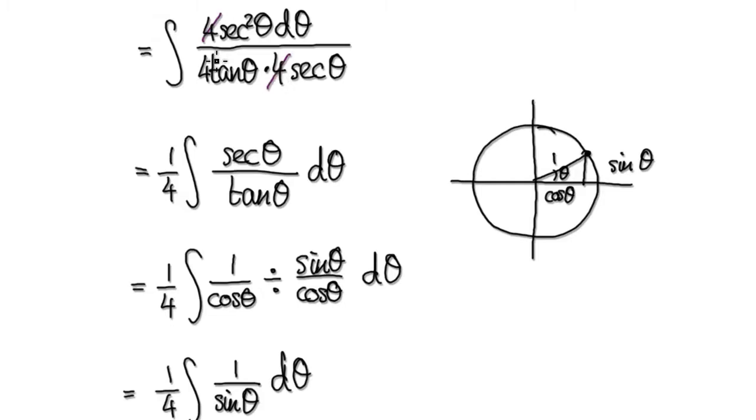The 4 will cancel out. You've still got a quarter here. A quarter is a constant, you can take it out. That will then give you this, and then secant squared and you've got your secant here, so that will remain as a secant. And then you've got your tan at the bottom.